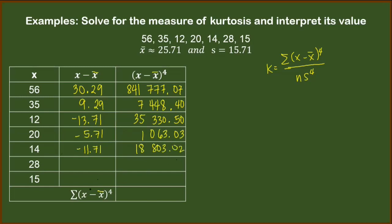Do the same for 28. We have here 2.29. Raise this to the 4th power. We have 27.50.